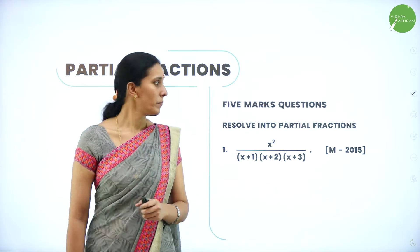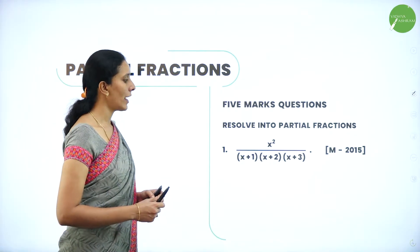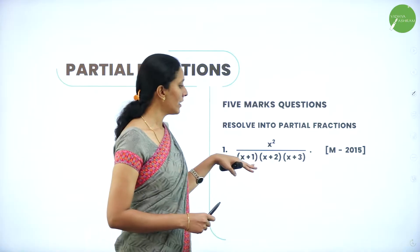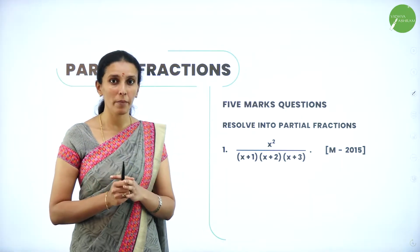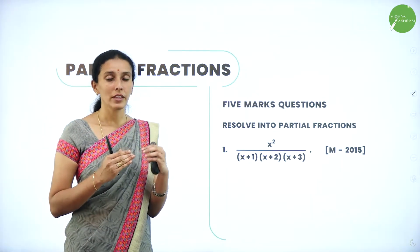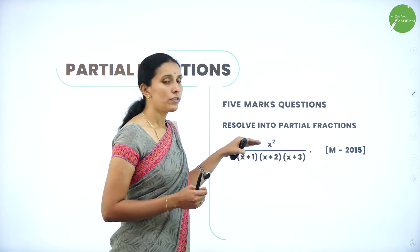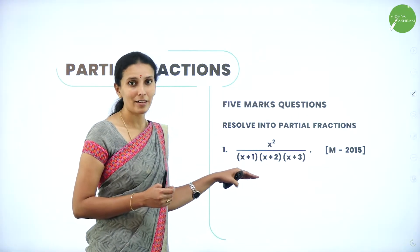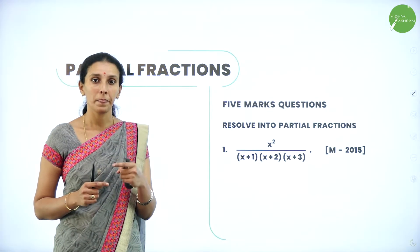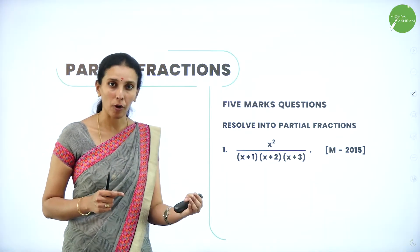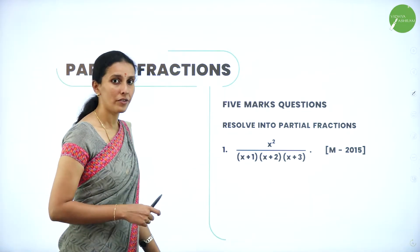Let's see the questions now — resolve into partial fractions. The first question is x² divided by (x+1)(x+2)(x+3). We have here non-repeated linear factors. When you have non-repeated linear factors in the denominator, you have to write them into three simple fractions separately. The very first thing to note: the degree of the denominator should always be greater than the degree of the numerator for it to be a proper fraction, otherwise it is an improper fraction, which must be converted to proper before resolving. Here this is clearly a proper fraction, so we can resolve it.